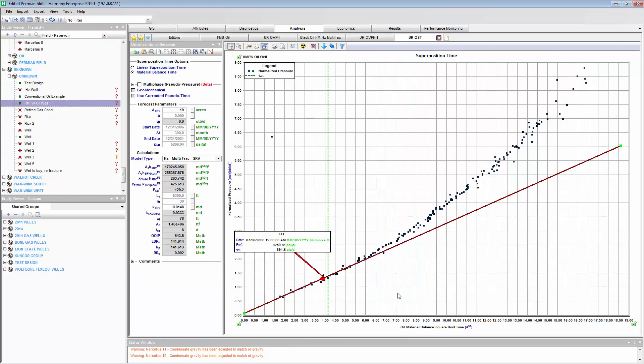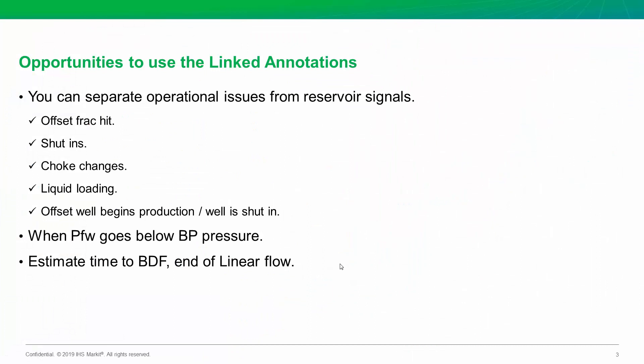This is great to know, especially for comparing it against other wells. What does this mean for you? Number one, it's critical for engineers to separate changes in the reservoir from just operational changes. These linked annotation arrows let you mark operational changes to help separate reservoir behavior from other factors. For example: placing an arrow when an offset frack occurred, placing an arrow when the well is shut in, placing an arrow whenever there's a choke change, or placing an arrow once a well has become liquid loaded. There will be a later video discussing the liquid loaded diagnostic in more detail.